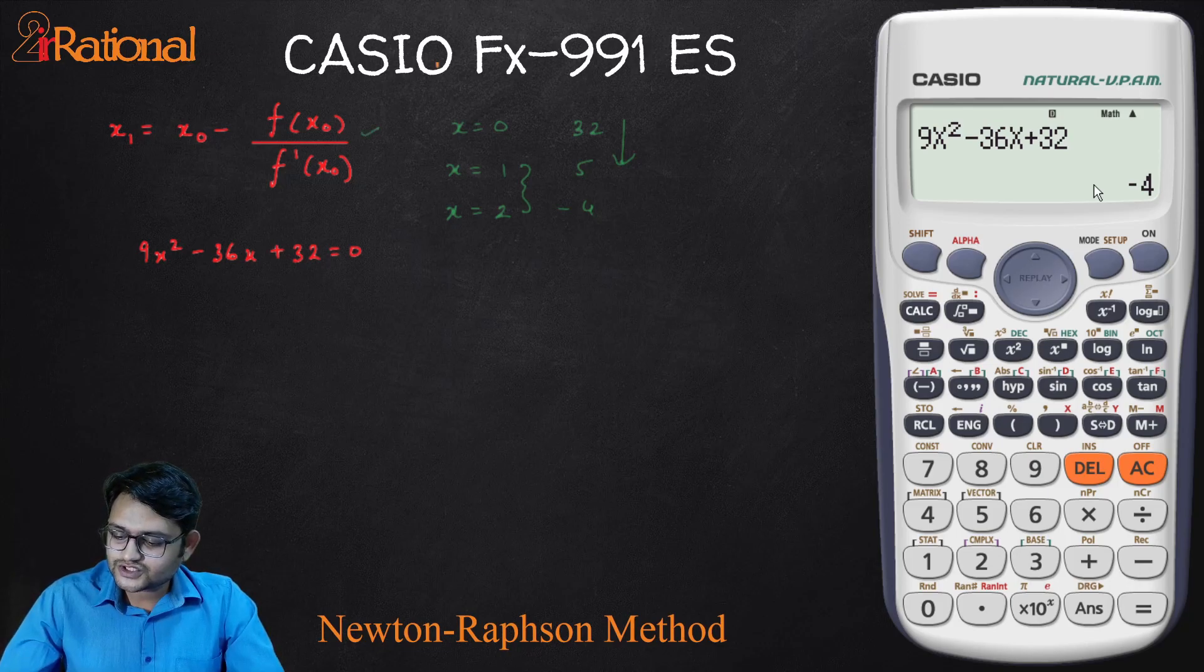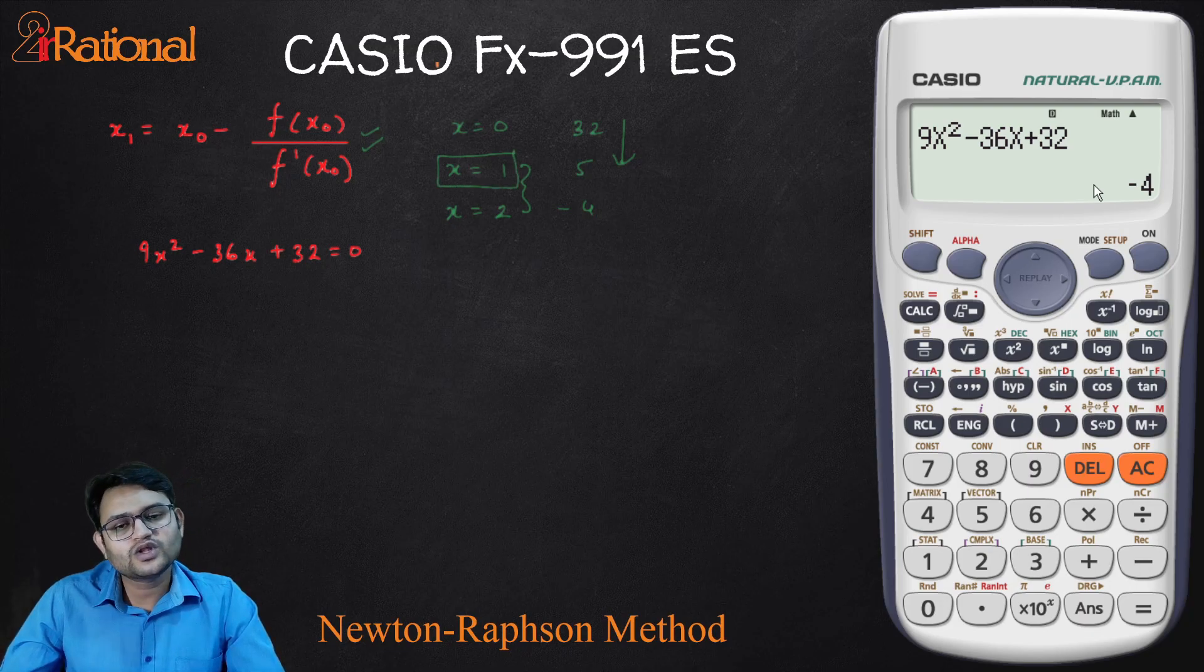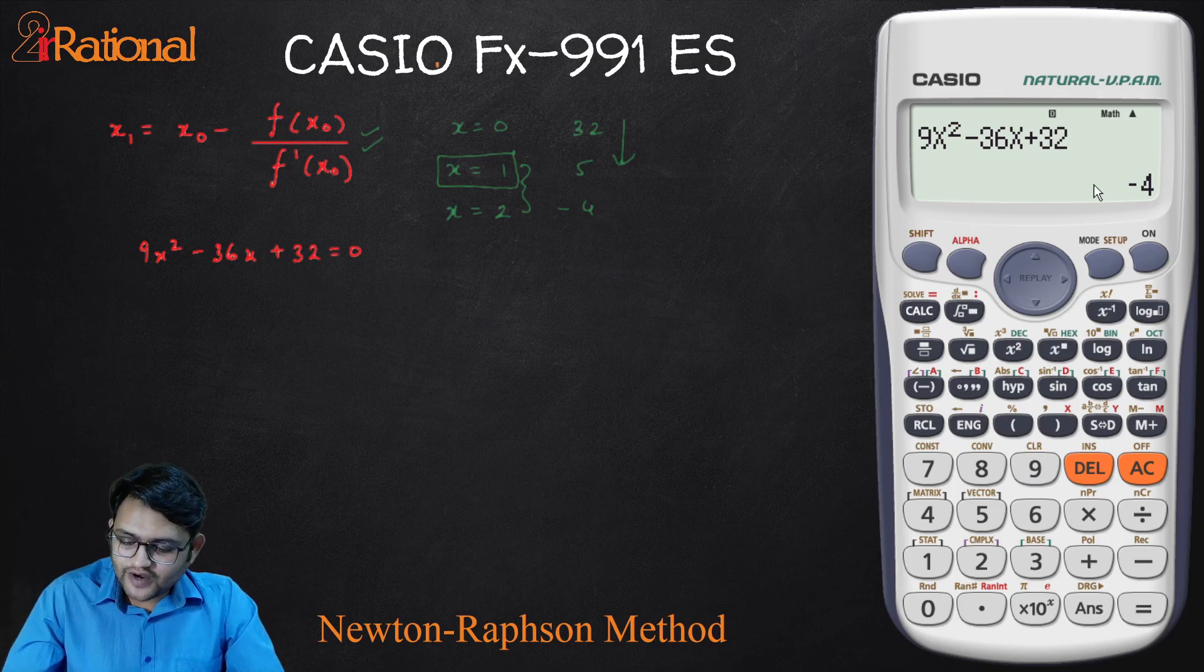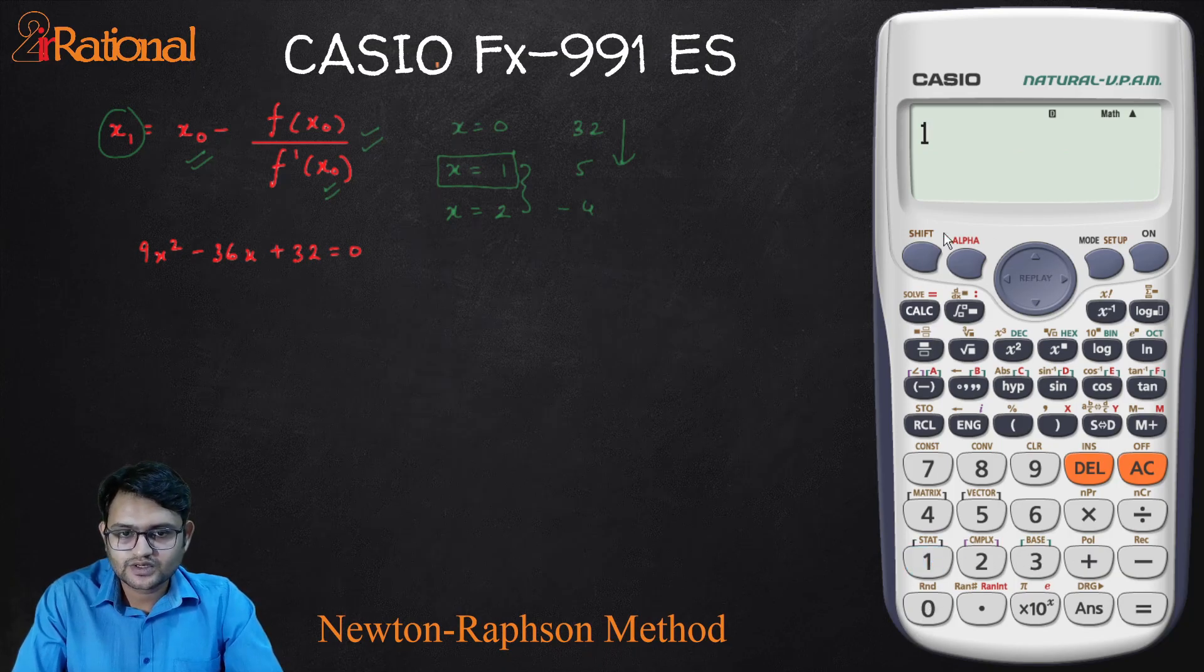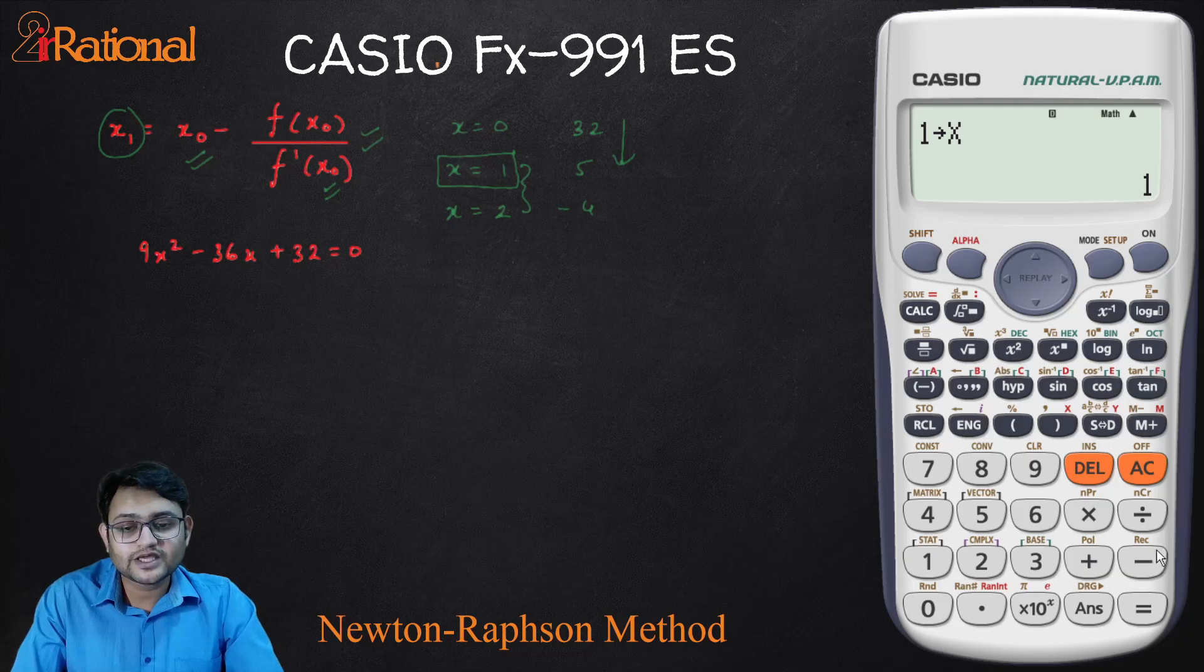Now I will use this Newton-Raphson method and take x0 as x is equals to 1. You can go with x is equals to 2 as well. That will work too. So to find the next iterative value, all I have to do is substitute here x0 as 1. First, I will store the value of 1 in x and now I will make the equation. I will press AC.